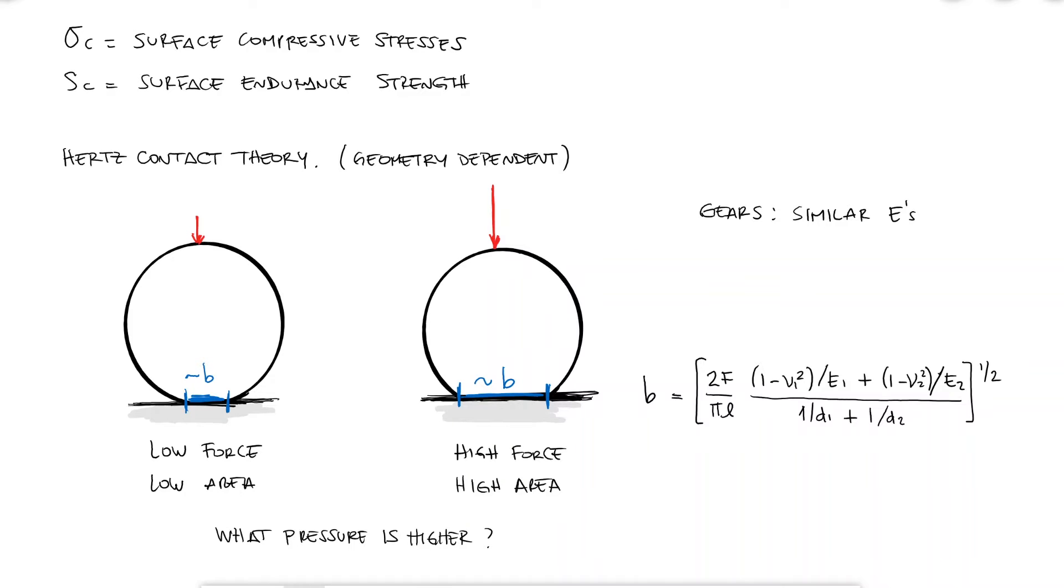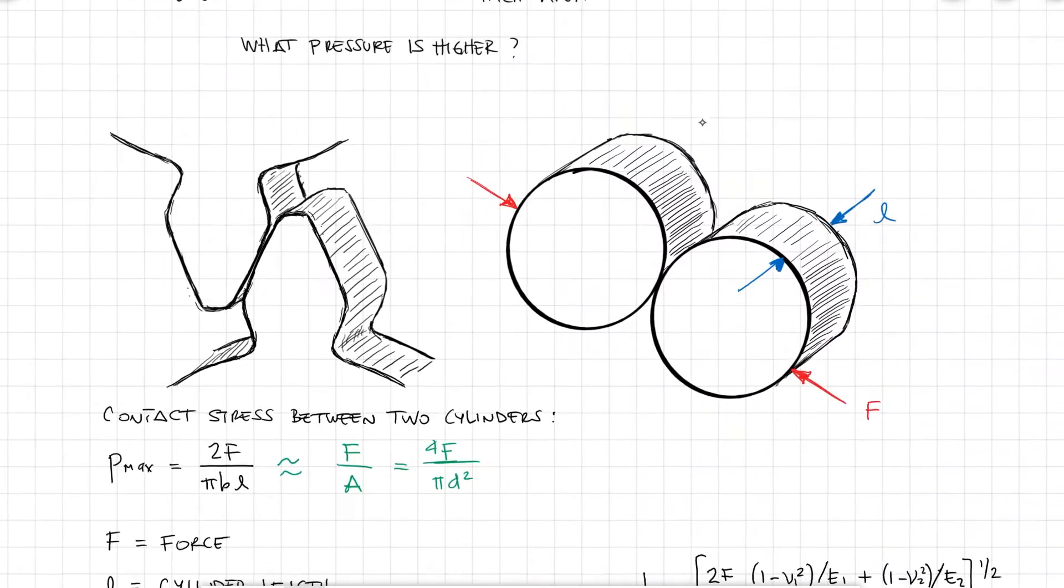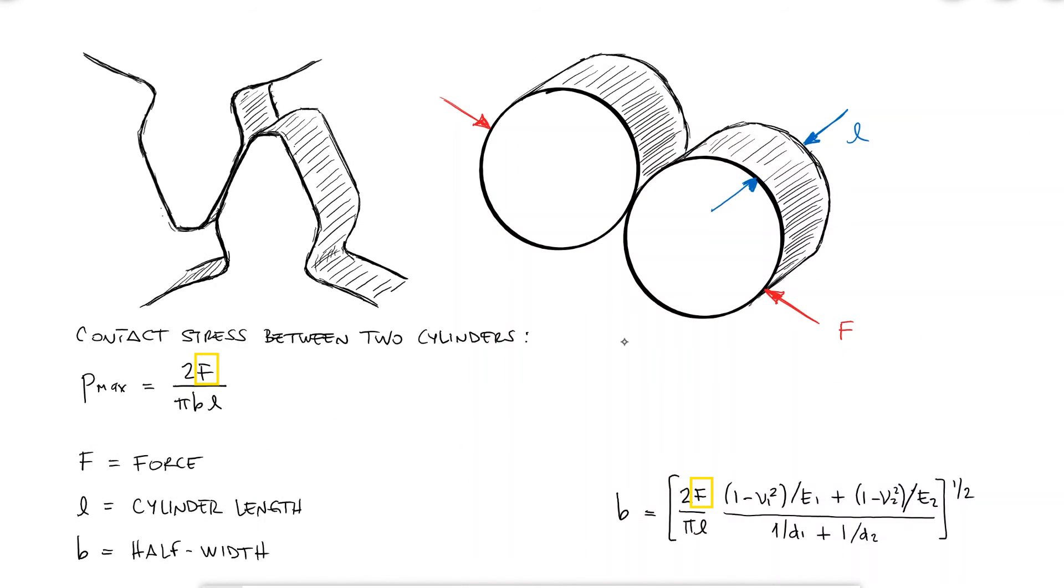Let's look at these variables one by one to find what they would be equivalent to within the gear geometry, and not just the generic cylinder.